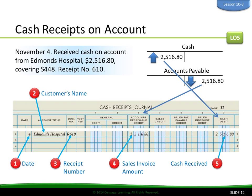Cash receipts on account. On November 4th, we received cash on account from Edmonds Hospital, covering invoice number 448, receipt number R610. We've got the cash, which is a debit, and accounts receivable, which is a credit. The receipt number is R610, the account is Edmonds Hospital, and the date is recorded.